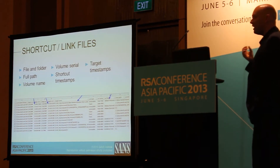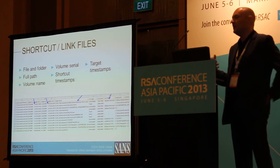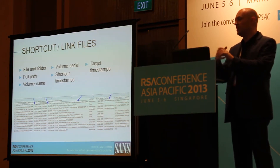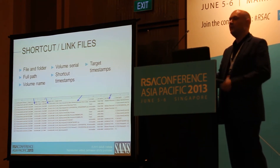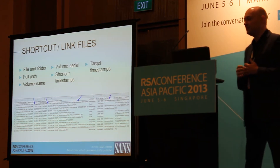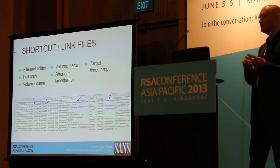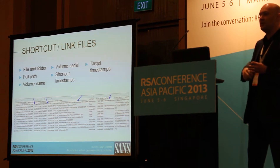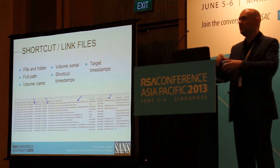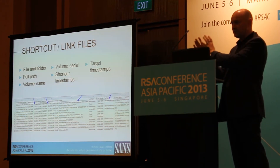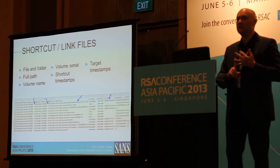The shortcut file also tells you a range of timestamps. Because it's a file, it has its own timestamps on the file system — for example, when the user accessed that document for the first time correlates to the creation time of the shortcut, and when they last accessed the document correlates to the last access time. Embedded in the shortcut file are additional timestamps relating to the actual target. If it's a removable device, you can also get things like the volume name and even the volume serial number of that device.